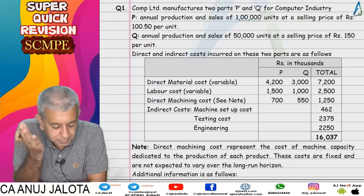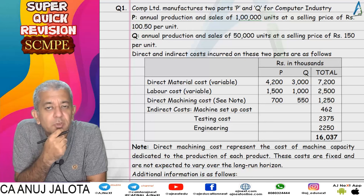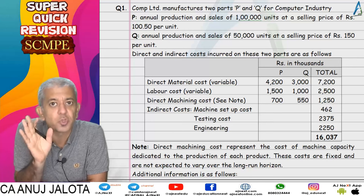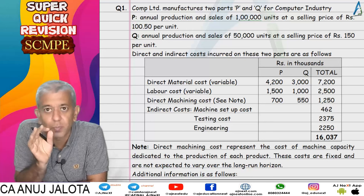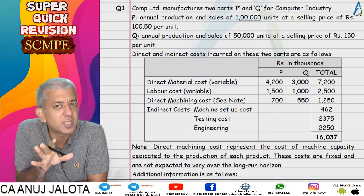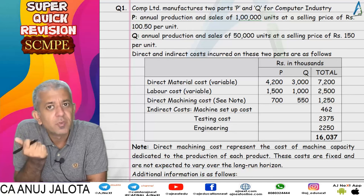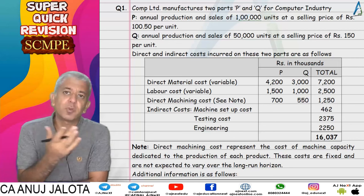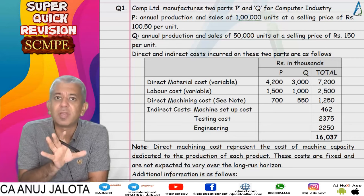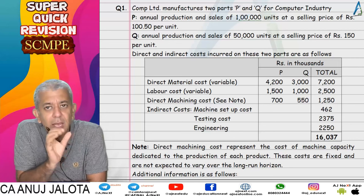Hi guys, welcome back to a super quick revision. The only aim of doing such revisions is to help you revise all your questions super fast. We were on target costing, which is part of activity based costing. You all have done the introduction in the previous part, and now we are continuing with the questions.